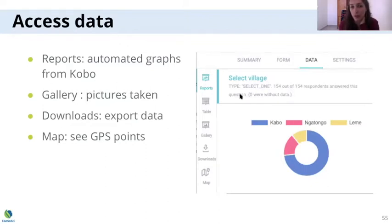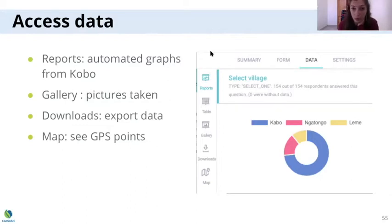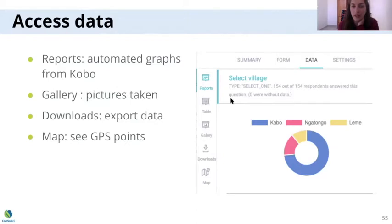These automated reports are basic graphs generated by Kobo. You do not have many options on how to display the graphs, but you can change the colors and the chart type — for example, deciding between a pie chart or a histogram. Other than that, it's automated reporting done by Kobo.